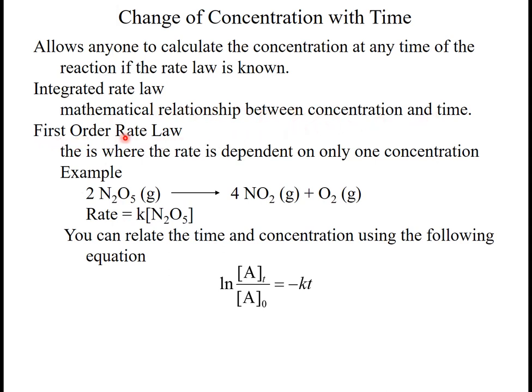So for a first order, which basically means the rate law is like this and the power for this one is 1, I can relate the time and concentration using the natural log of the concentration at time t over the initial concentration is equal to negative kt. Where these are concentrations, k is the rate constant, and t is the time.